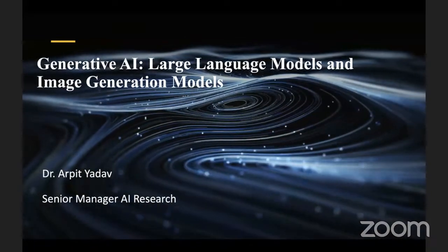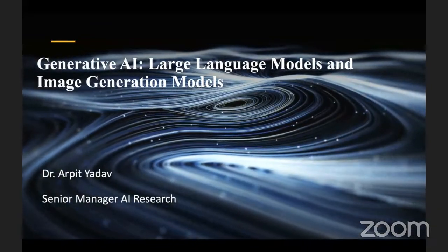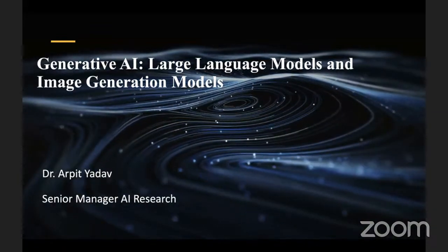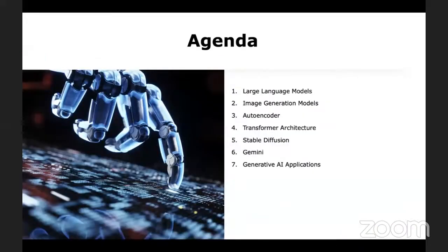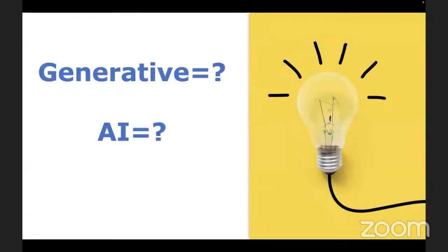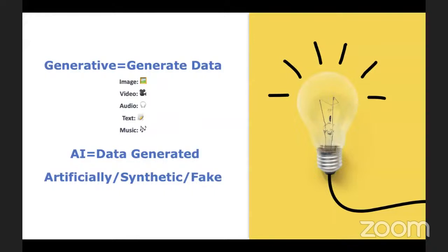Generative AI means Generative Artificial Intelligence. It is going to generate data — images, video, audio, text, and music — in such a way that it looks real. The data it generates is called artificially generated, synthetic, or fake data. In Generative AI, we generate huge volumes of images, video, audio, and text data that is produced artificially.